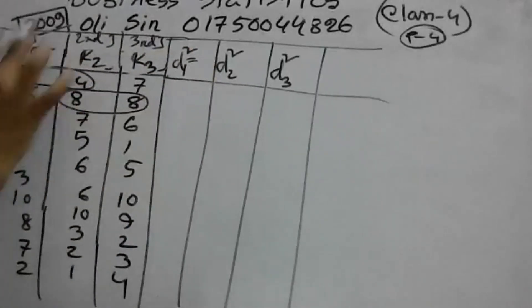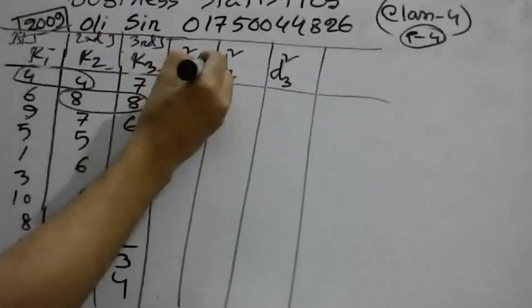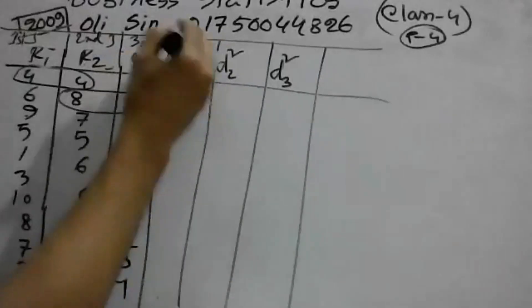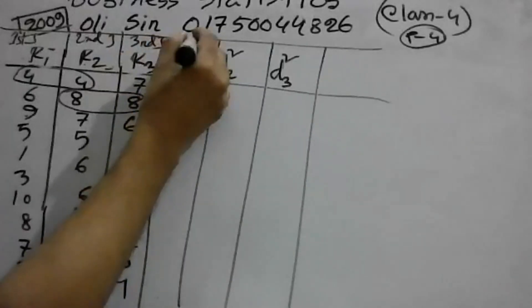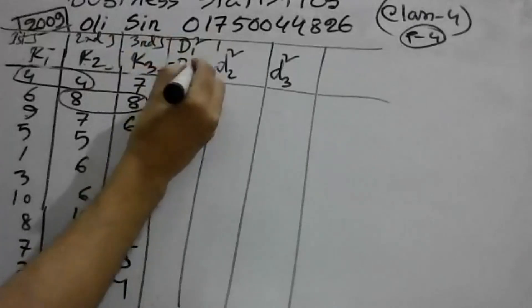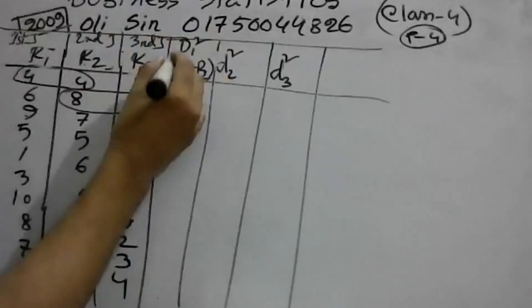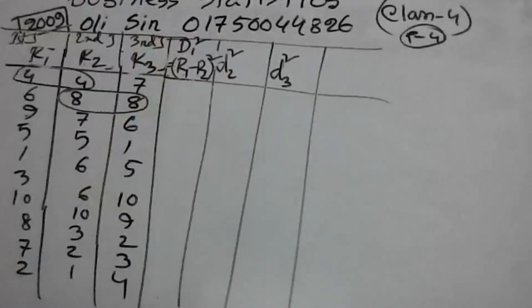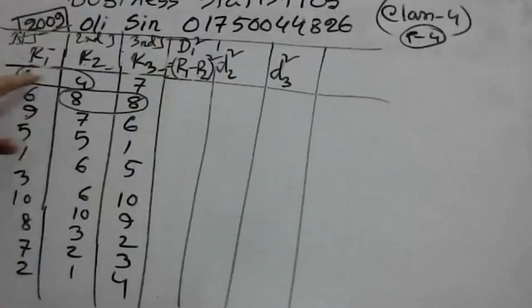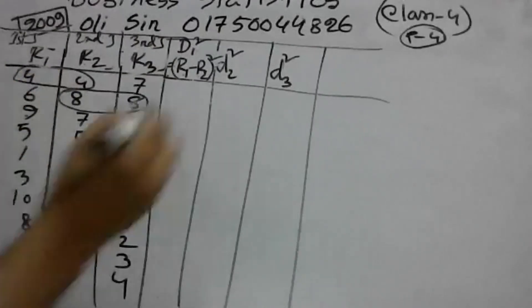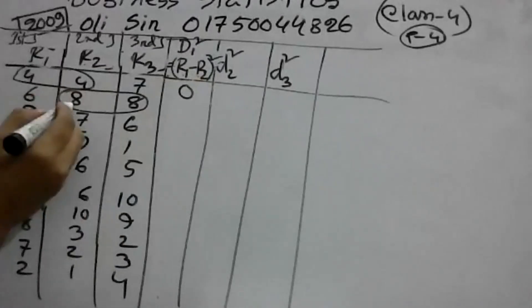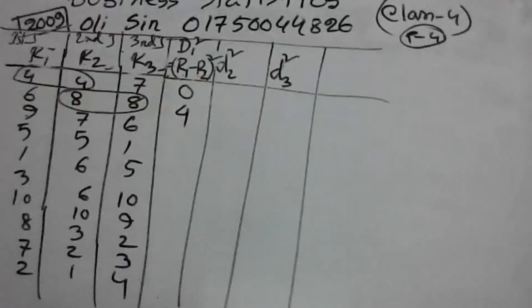D1 is R1 minus R2. D1 squared equals R1 minus R2, whole square. The result gives us the differences between judges' rankings.